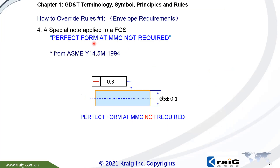Number 3: you can write a special note — 'Perfect form at MMC not required.' As we know, with Rule No. 1, if the part reaches MMC the form should be perfect. But if you write 'perfect form at MMC not required,' then there is no more Rule No. 1. This is an older way to override Rule No. 1 — using the circle I or independency symbol is much simpler.